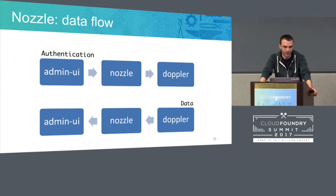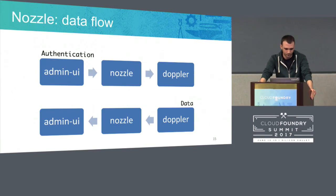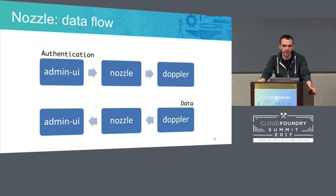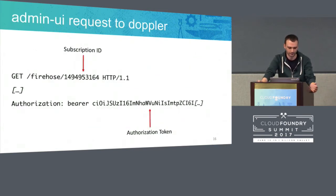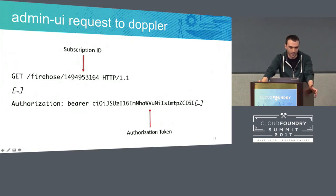How can we do that? First, we need to make the Admin UI target our nozzle — our Go application — instead of the Doppler endpoint in Cloud Foundry. Then the nozzle should be able to authenticate to Doppler. But we don't want to write the Admin UI credentials into the nozzle because it's a Cloud Foundry application and it's public. The solution: if we just set the Doppler endpoint on the Admin UI to be the nozzle instead of Doppler, the Admin UI will already send to the nozzle the authentication and the subscription ID necessary to request data from Doppler. On the nozzle, we can read the subscription ID and the token used by the Admin UI, which thinks it's connecting to Cloud Foundry but is actually connecting to our application acting as a proxy.